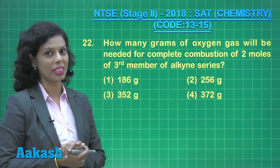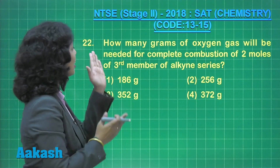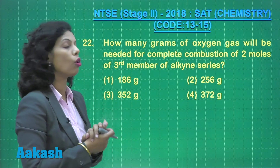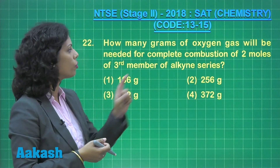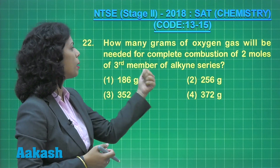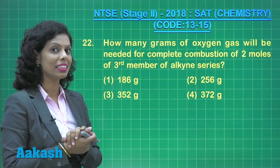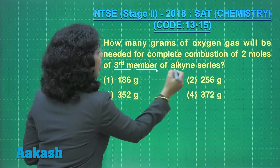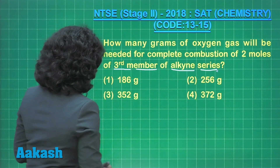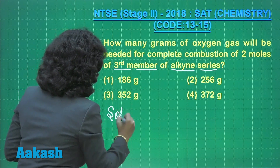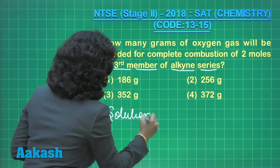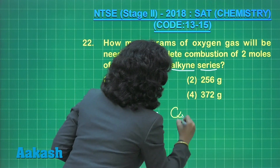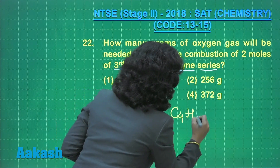Question 22 asks how many grams of oxygen gas will be needed for the complete combustion of two moles of the third member of the alkyne series. The third member of the alkyne series is C₄H₆, which is butyne.